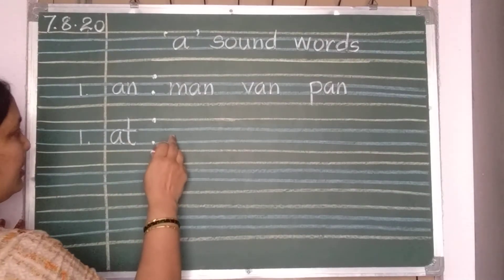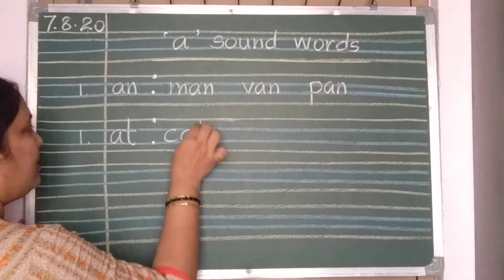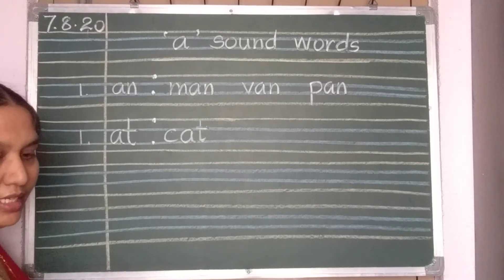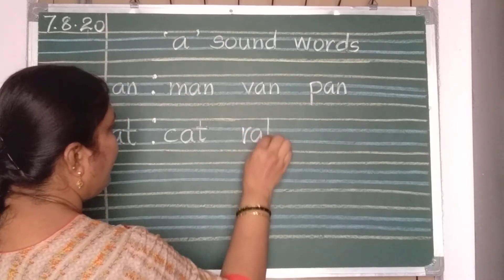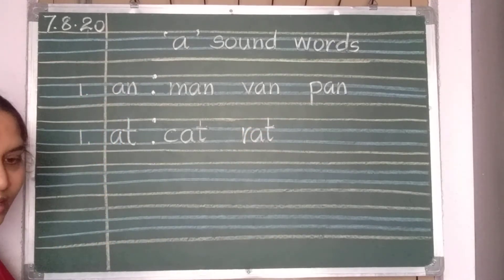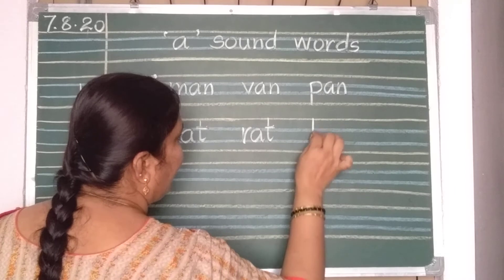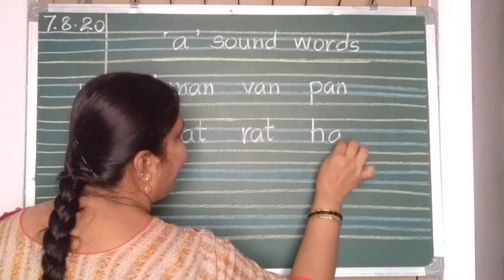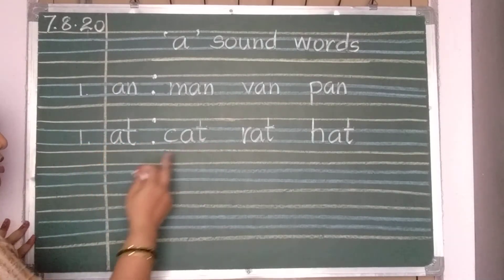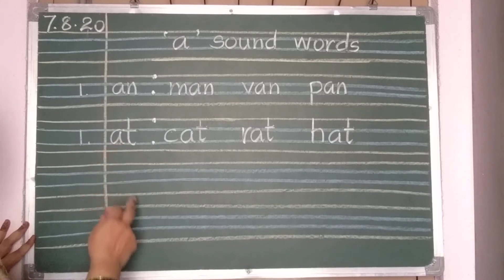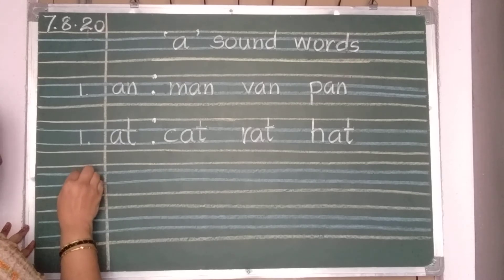Now, A, T words. Here. C, A, T, cat. Again two finger gap and write. R, A, T, rat. Two finger gap again and write. H, A, T, hat. Same. This A, T words also three times you should repeat. One, two and three. So, after writing three times, again number 1 you should keep.